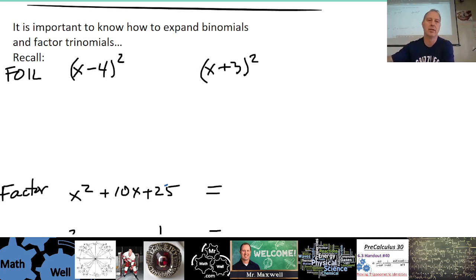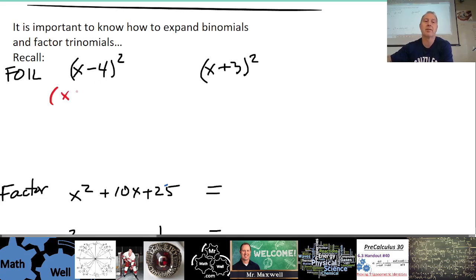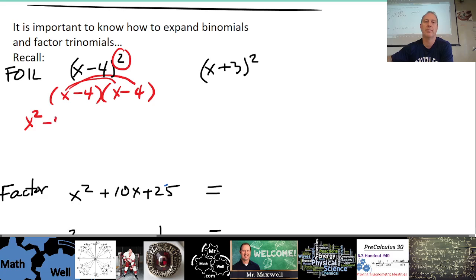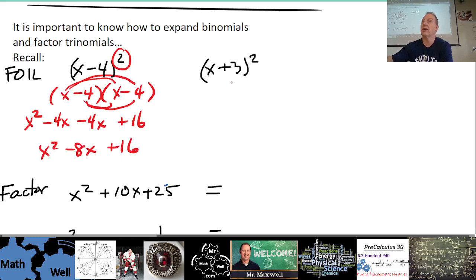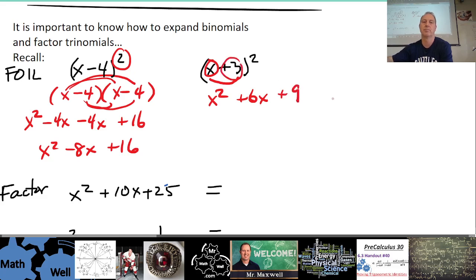Let's get some practice. To expand x minus 4 all squared, remember it's x minus 4 times itself. Using the FOIL method — first, outside, inside, last — this gives us x squared minus 8x plus 16. The quick way is: square the first term, multiply the two terms together and double it for the middle, then square the last term. So for x plus 3 squared: 3x and 3x is 6x, and squaring 3 gives plus 9.